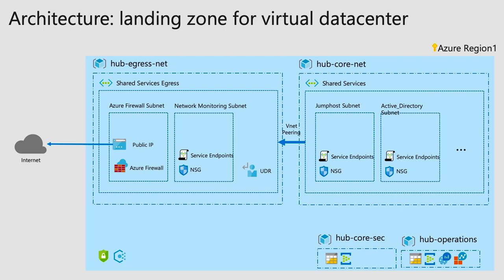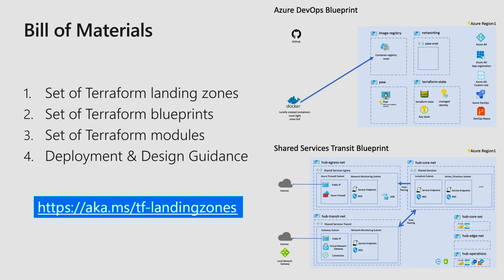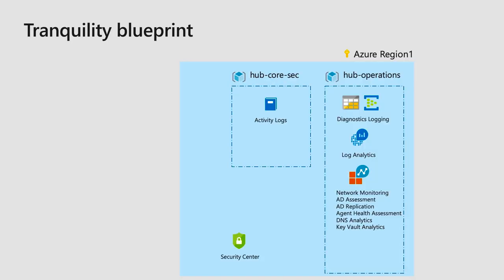It's a complex environment that deploys a ready-to-use foundation to lay your applications. The bill of material includes a set of Terraform landing zones, blueprints, modules, plus deployment and design guidance — how to create your RBAC model and access delegation. It's all available on GitHub at aka.ms/tf-landingzones. Let's start with our first focus, the Tranquility blueprint. This is one of the first blueprints used in the landing zone — deploying all the operations logging fundamentals, log analytics, active directory analytics, health, DNS analytics, key vault analytics, and security center.